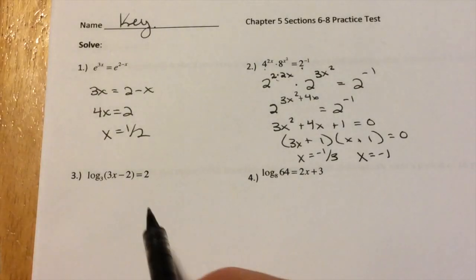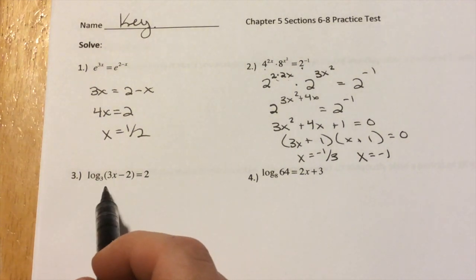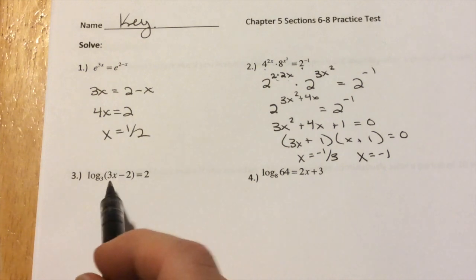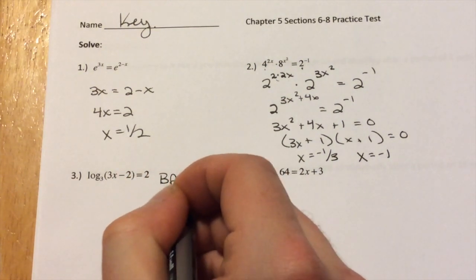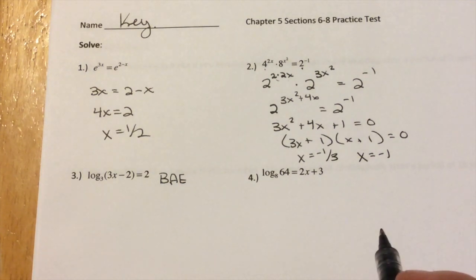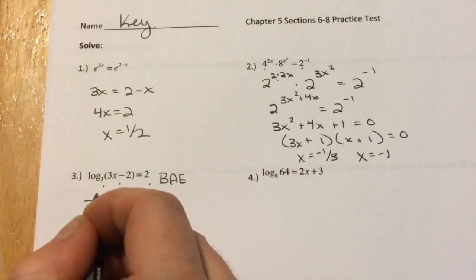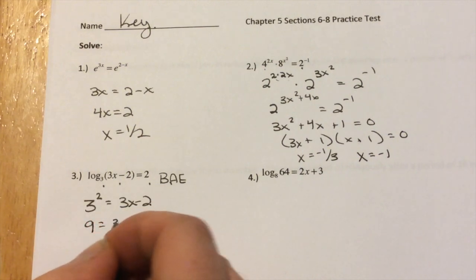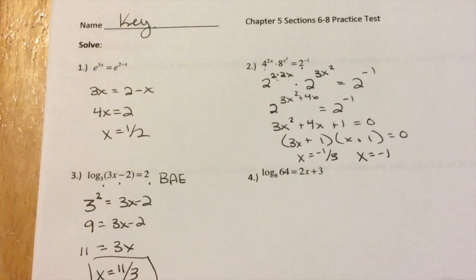Next up, solving logs. So what we want to do when we're solving logs is first of all look at, do I have 1 log and a number or two logs to see if we can set the insides equal to each other. So number 3, we only have 1 log, so we want to change this to exponential function. So we're going to use our bay right there. Base, answer, exponent. So we say it's 3 squared equals 3x minus 2. So that means 9 equals 3x minus 2. Add 2 to the other side, so 11 equals 3x. x equals 11 thirds. Simple as that.